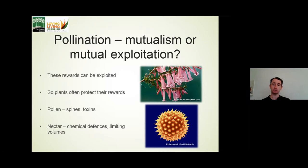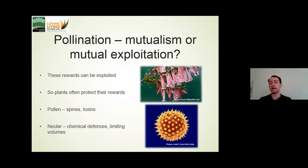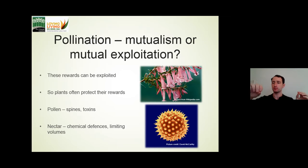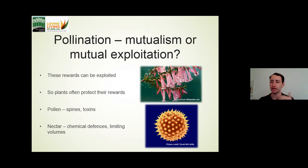Nectar similarly can have chemical defenses and secondary chemicals. Some have medicinal properties and very strong antibacterial properties. A flower can also limit the nectar available at any one time, enabling it to offer a reward without having it exhausted by a single pollinator. When we dig deeper into the pollinator relationship, we see complex levels of interaction — the adaptations of both plants and pollinators and how they each try to benefit themselves.